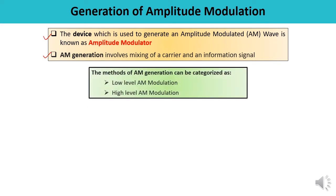There are two methods of AM generation: low-level AM modulation and high-level AM modulation. In low-level amplitude modulation, modulation is done at a very low power level, meaning very small power is associated with the carrier signal and the modulating signal. Therefore, the output power of the modulation is also low.